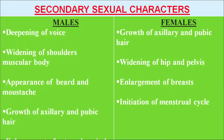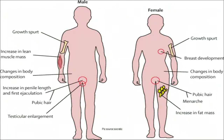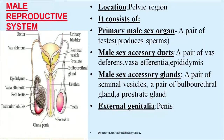Secondary sexual characters in males include: deepening of voice, widening of shoulders and muscular body, appearance of beard and mustache, and growth of axillary and pubic hair. In females: growth of axillary and pubic hair, widening of hip and pelvis, enlargement of breast, and initiation of the menstrual cycle. In both males and females there is growth spurt, increase in lean muscle mass, and changes in body composition. In males: increase in penile length, first ejaculation, pubic hair, and testicular enlargement. In females: breast development, menarche (first menstrual cycle), and increase in fat mass.